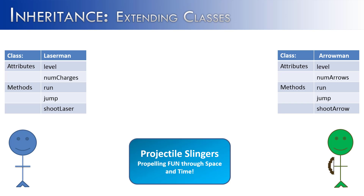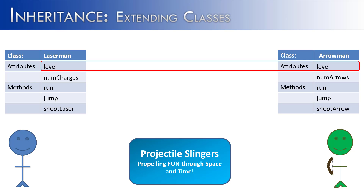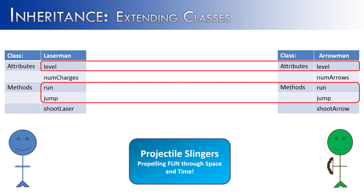As you're writing this program, you can see there's some commonality between Laser Man and Arrow Man. They both have a level, and in our game the level works the exact same way — you get experience points and advance. Another commonality is running and jumping; both characters do these the exact same way. So if we have the same attributes and methods inside the classes, we could use inheritance to better write these characters.